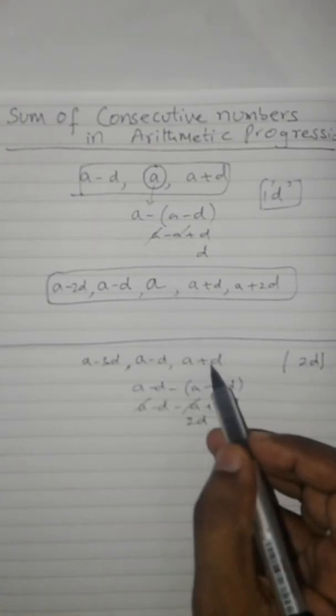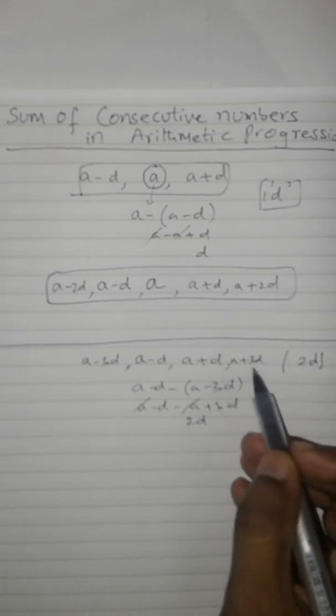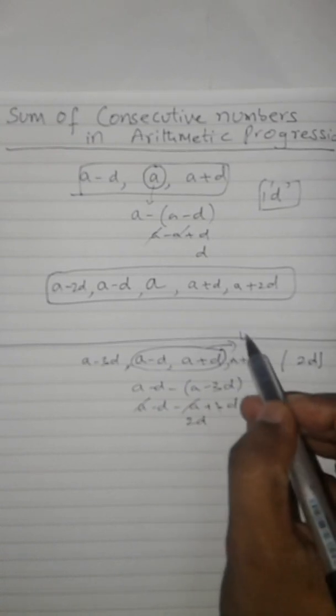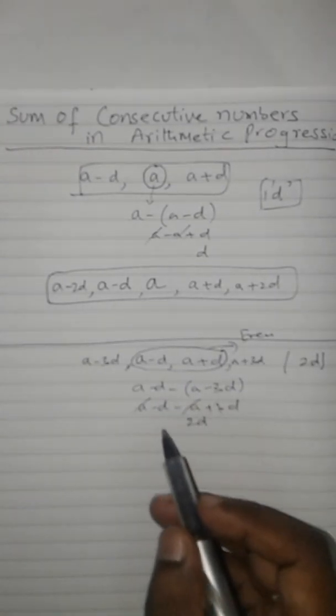Then it should be a plus d and a plus 3d. These terms should be in the middle whenever you are finding even numbers of AP.